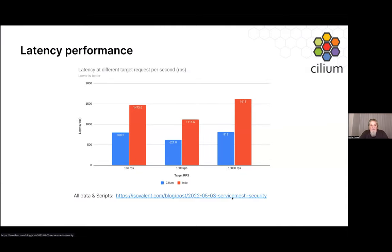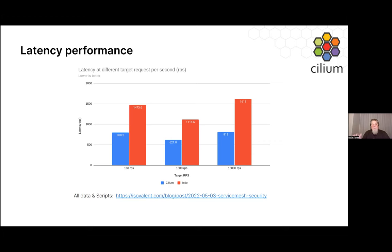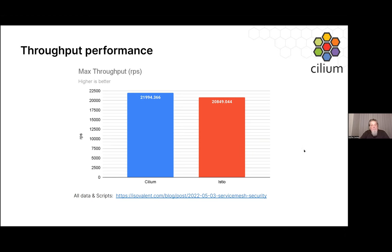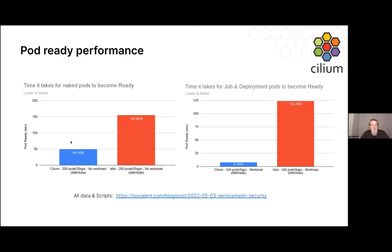Looking at latency numbers comparing Cilium versus Istio — which is one of the sidecar solutions — a sidecar proxy does incur some latency. Because we handle traffic manipulation transparently in the Linux kernel, we're able to be much more efficient about requests per second. Max throughput works out to be pretty much the same, but pod-ready performance is faster since we're only waiting for the pod to start up, not adding a sidecar.